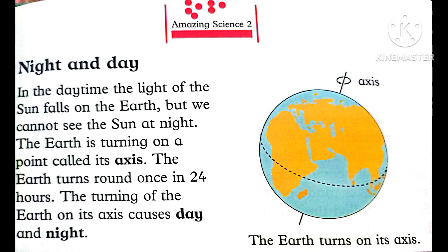Next is the topic of night and day. In the daytime, the light of the sun falls on the Earth. We cannot see the sun at night. The Earth is turning on a point called its axis. The Earth turns round once in 24 hours. The turning of the Earth on its axis causes day and night.